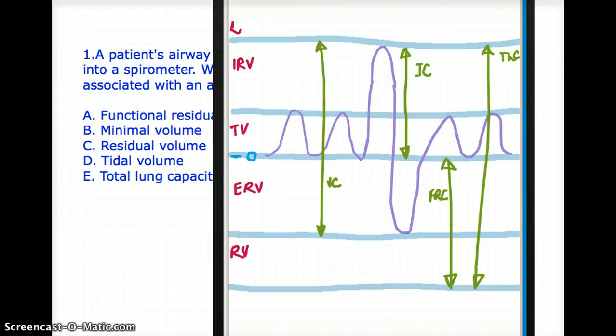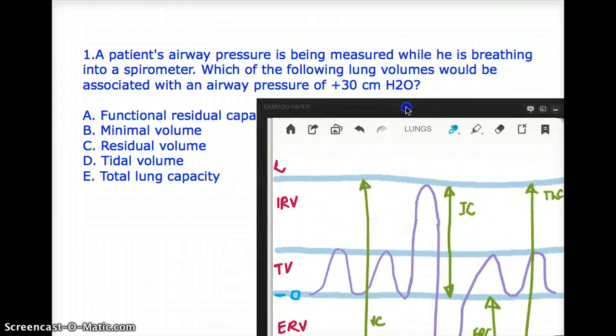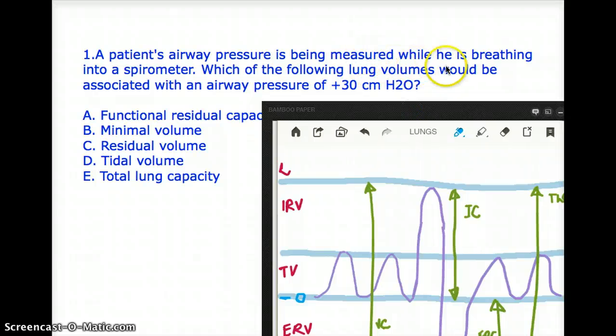Now let's go back to the question one more time. The question says the patient's airway pressure is being measured while he's breathing into a spirometer. Which of the following lung volumes would be associated with an airway pressure of positive 30 centimeter water?